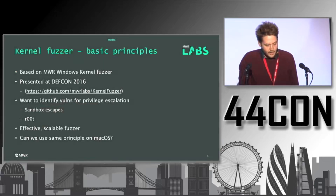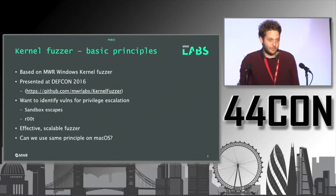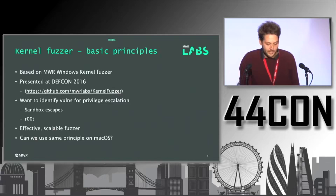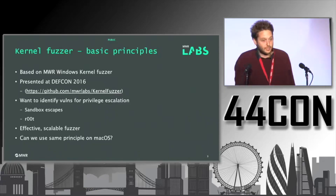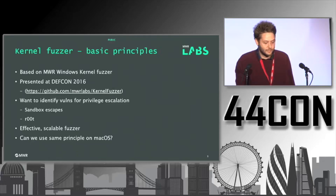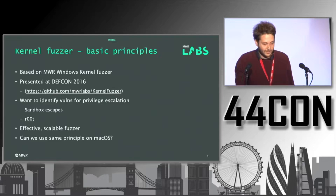So OSX Fuzz came around from our Windows kernel fuzzer, which we released last year at Defcon. The idea is we want to find privilege escalations for things like sandbox escapes, getting root, et cetera. We found the fuzzer we built last time was pretty effective — we found a whole bunch of Windows bugs targeting Windows 7, but it also worked on Windows 10. It was also pretty scalable, and the whole point was it could be targeted against other systems, so we wanted to get it working on Mac OS and potentially iOS as well.